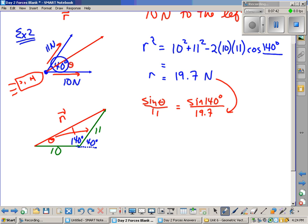19 point, whatever it was, to get 19.7. A little bit of math, since it's divided by 11, multiply by 11, sine theta equals 11 sine 140 over 19.7. Punch that in your calculator, inverse sine, and ultimately you should get 21 degrees.